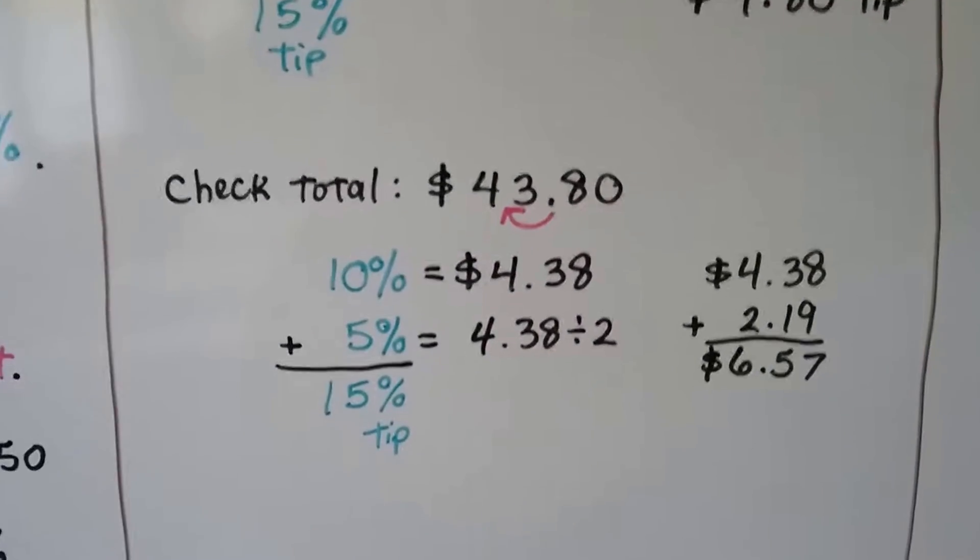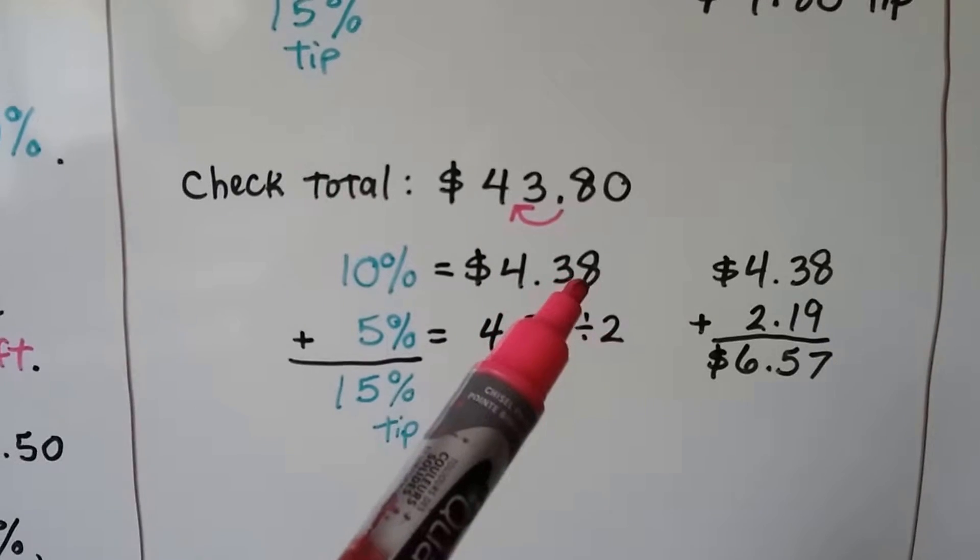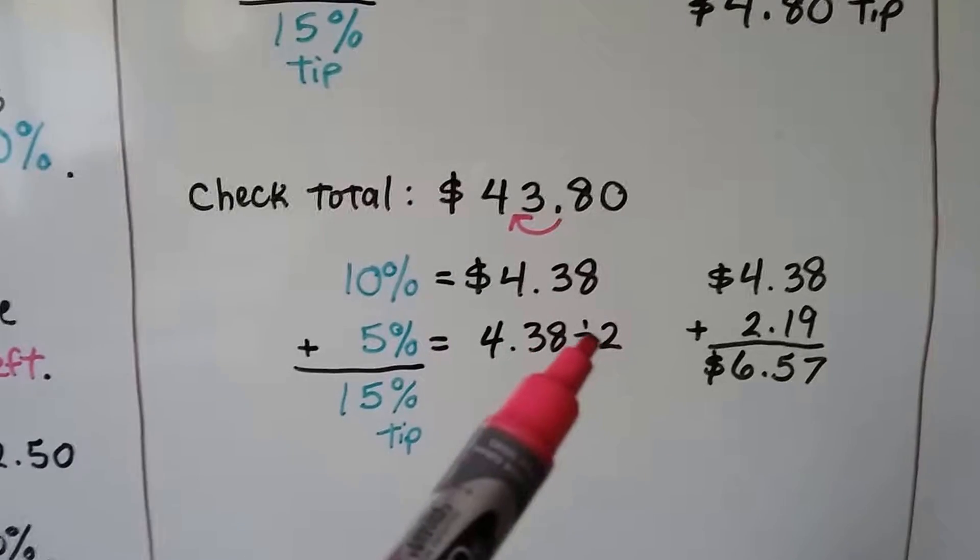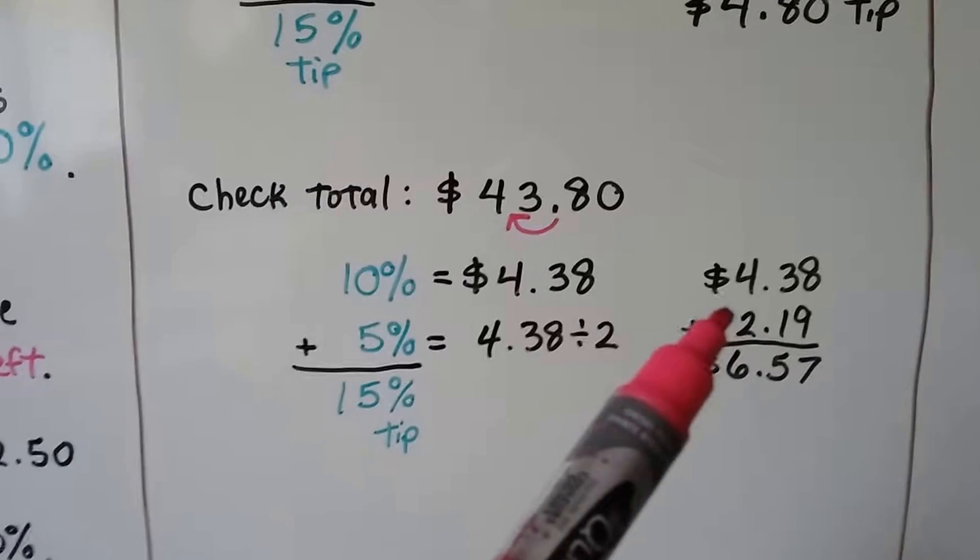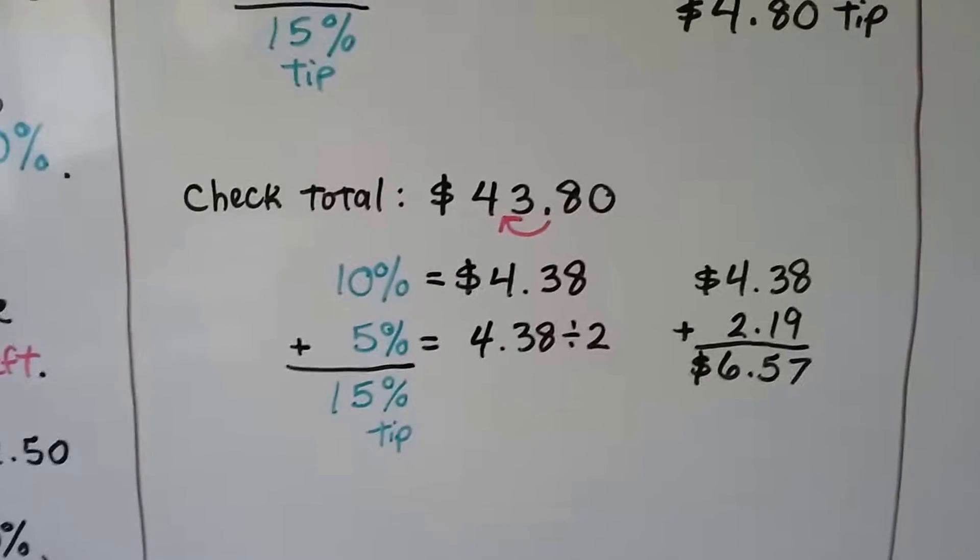If a check total is forty-three dollars and eighty cents, ten percent would be $4.38. Five percent would be half of that, divided by two, which is $2.19. And our fifteen percent would be $6.57.